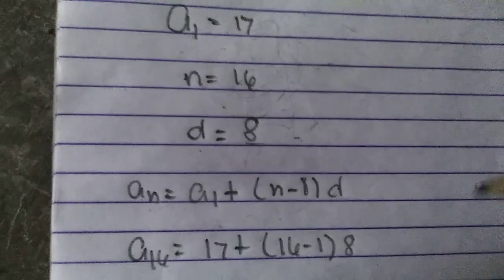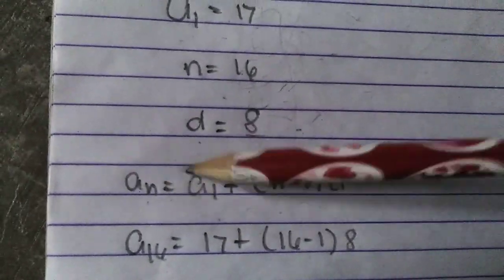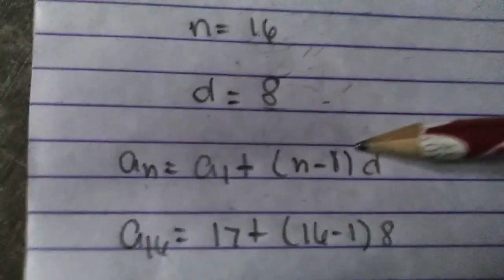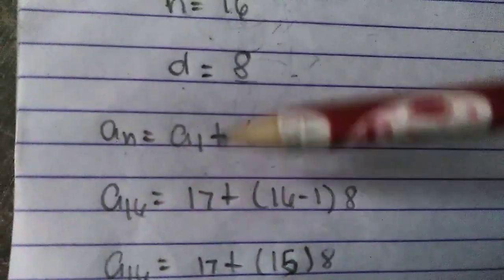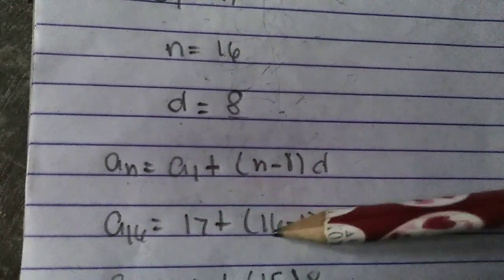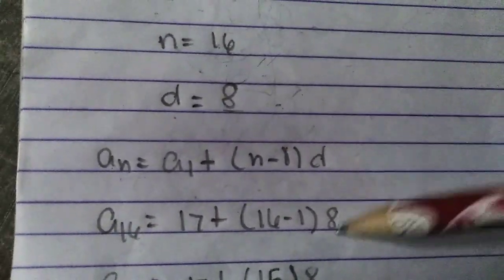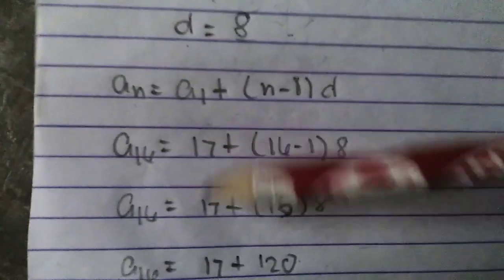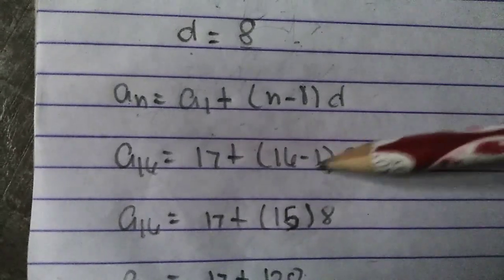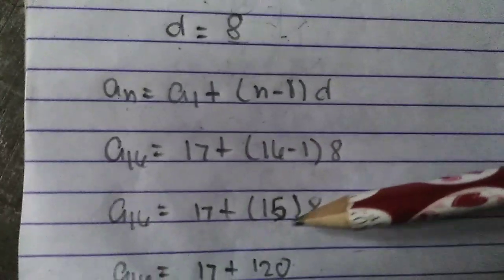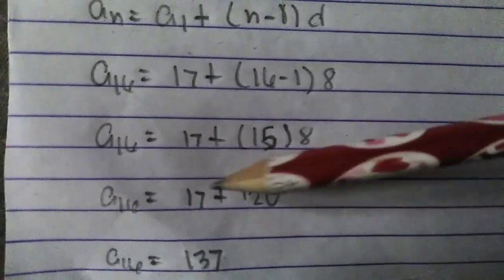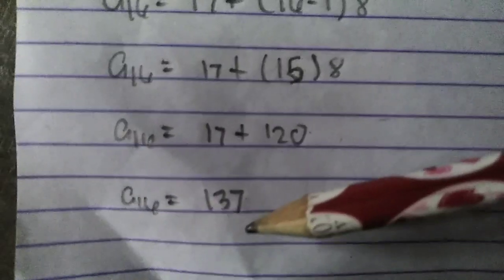We are going to substitute the values into the formula: a sub n equals a sub 1 plus quantity of n minus 1 times d. Substituting the values: n is 16, a sub 1 is 17, and d is 8. Solving: 16 minus 1 equals 15, multiplied by 8 is 120, and 120 plus 17 is 137.